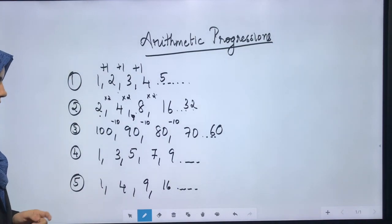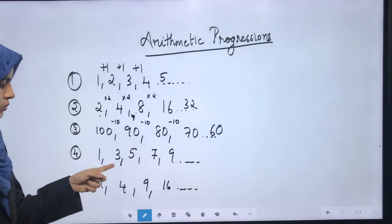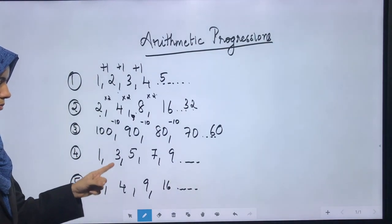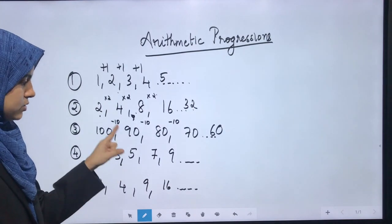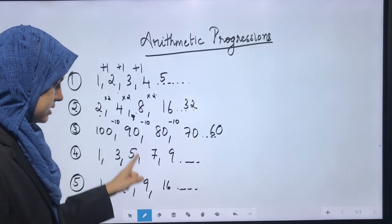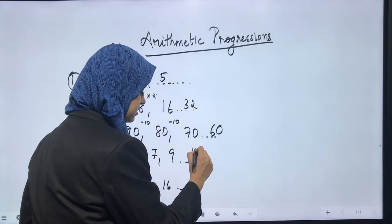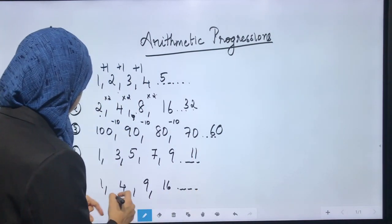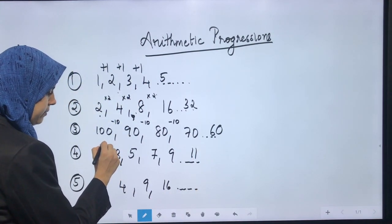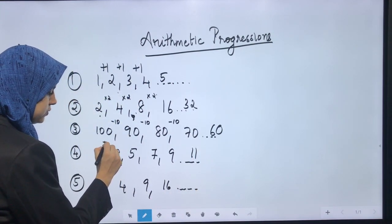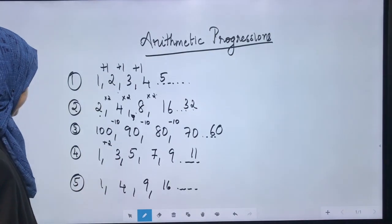In the fourth example: 1, 3, 5, 7, 9, 11. We have 1 plus 2 gives 3, 3 plus 2 gives 5, 5 plus 2 gives 7, 7 plus 2 gives 9, and 9 plus 2 gives 11. Each term is obtained by adding 2 to get the next term.